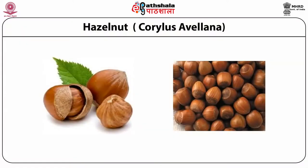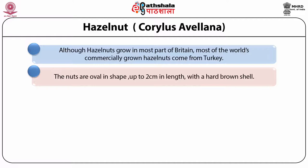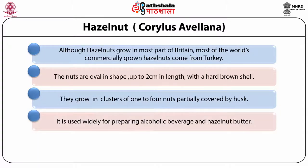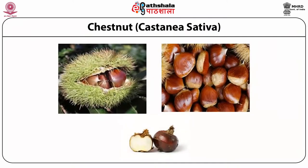Now we will discuss hazelnut, which is a foreign nut. Although hazelnuts grow in most parts of Britain, most of the world's commercial supply comes from Turkey. The nuts are oval in shape, up to 2 cm in length with a hard brown shell. They grow in clusters of 1 to 4 nuts partially covered by husk. Hazelnuts are used widely for preparing alcoholic beverages and hazelnut butter. The nut is rich in fiber, calcium, potassium, magnesium, and vitamin E.